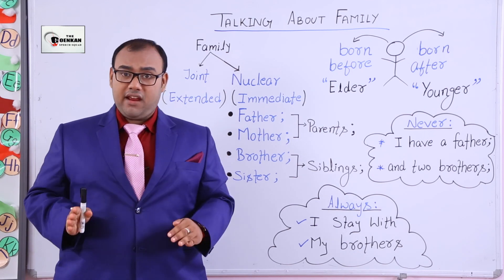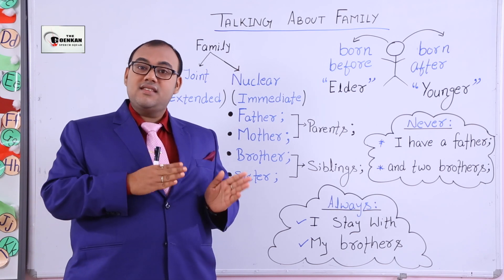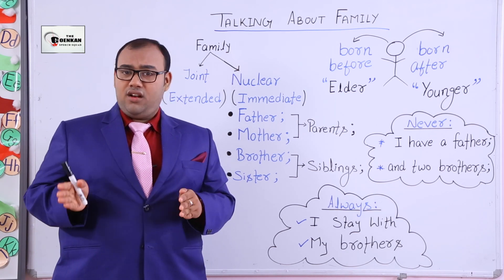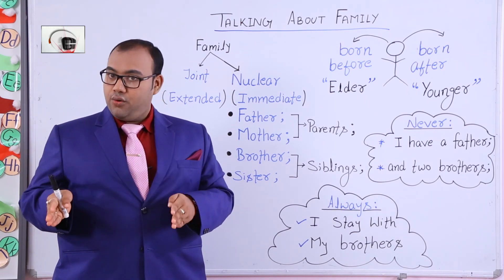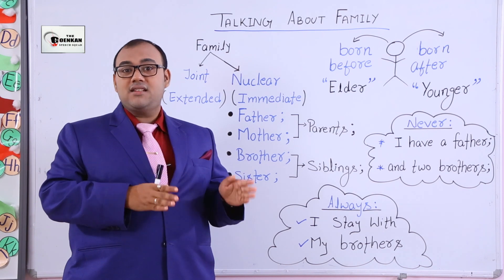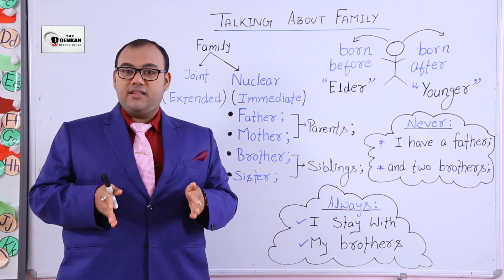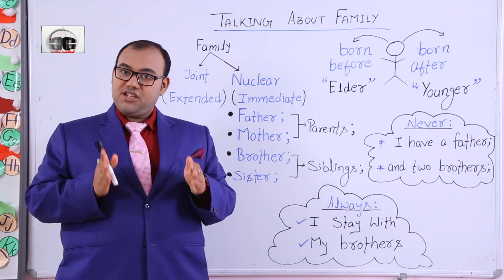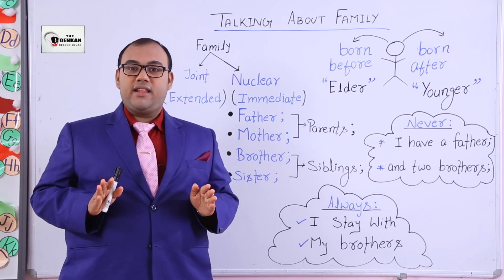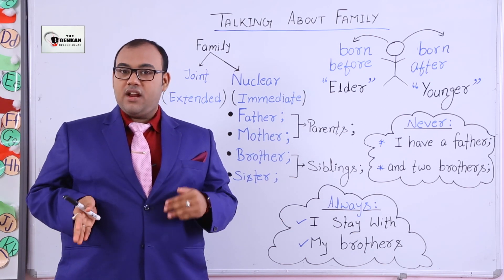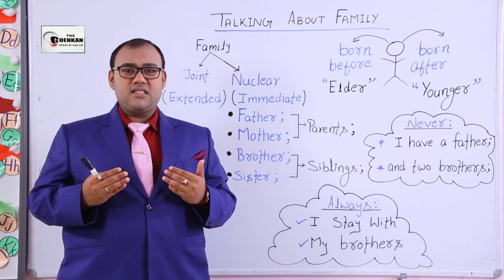If you don't stay with your parents or you are away, you should mention the place where your parents stay. For example, 'I stay alone but my parents stay in Burdwan.' That gives your listener the impression that you are staying alone but your parents are somewhere else. But don't say 'I am staying alone and my parents are staying at their home' — that is not right.